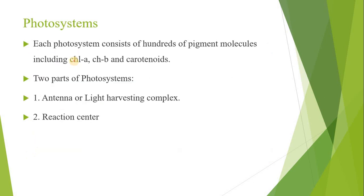There are two photosystems and each photosystem consists of hundreds of pigment molecules including chlorophyll A, B and carotenoids. There are two parts of photosystems. The one is known as antenna complex or light harvesting complex which absorbs and captures light. And the other part is the reaction center, which is where the reaction starts.